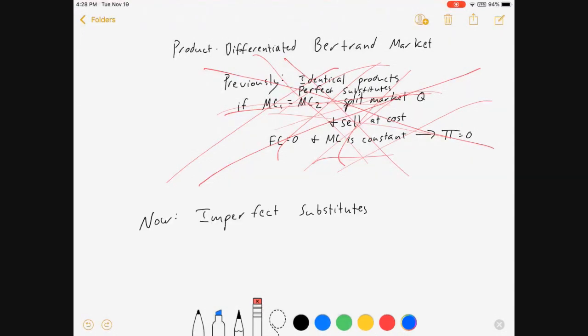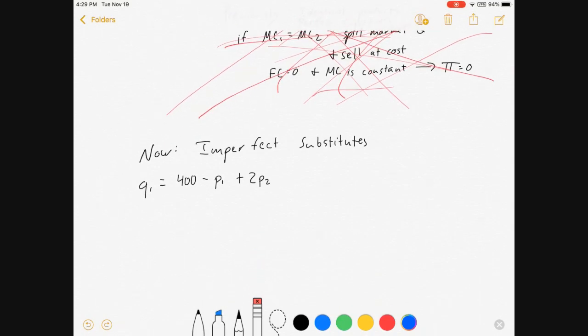We're going to change all of that now. We're going to get rid of all of those ideas. Let's start with the idea of imperfect substitutes. Our firms are selling slightly different goods. So here's a demand curve for firm 1: the quantity demanded is 400 minus P1 plus 2P2. If the price of firm 2 goes up, my demand for good 1 goes up. The two prices enter the demand curve with different coefficients. They're not perfect substitutes, but there is a relationship.